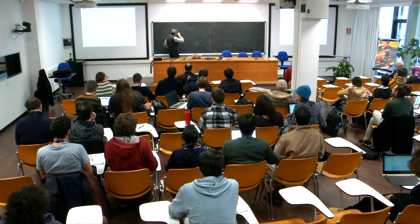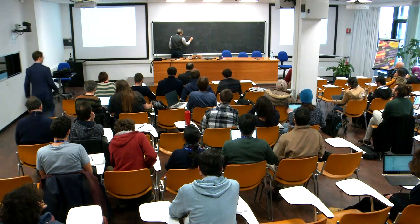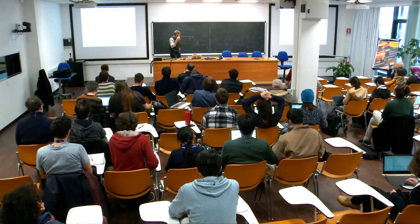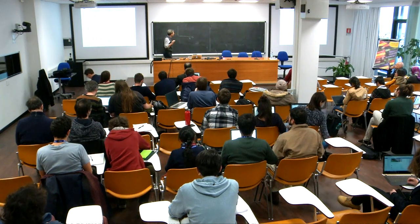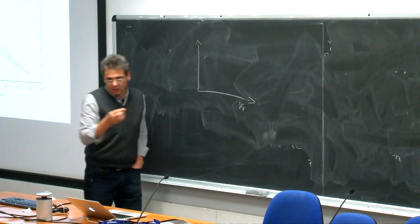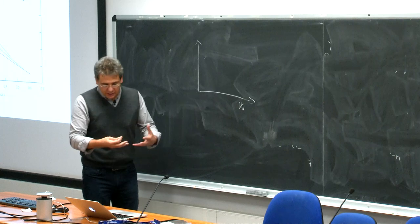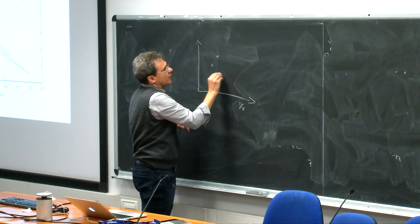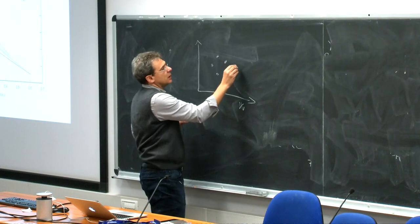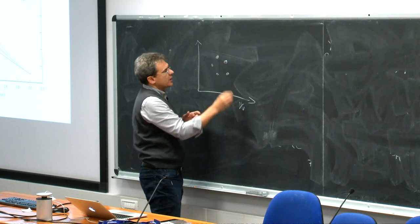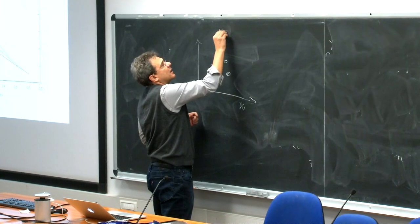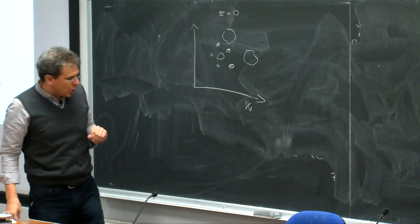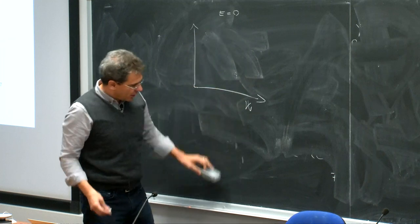To summarize what was shown yesterday: in the weight space of non-convex neural networks storing random patterns with random labels, this property does not depend much on the data but rather on the device itself. The weight space can be composed of narrow minima of the loss function — regions where the error over the training set is zero — and also larger regions.